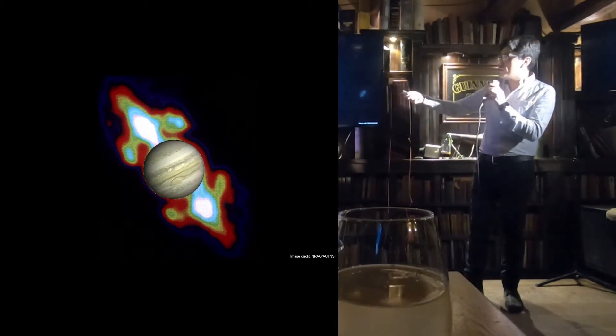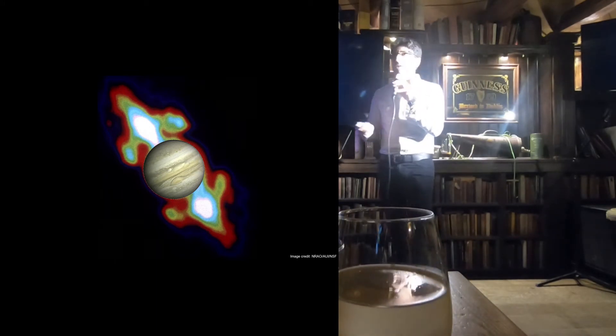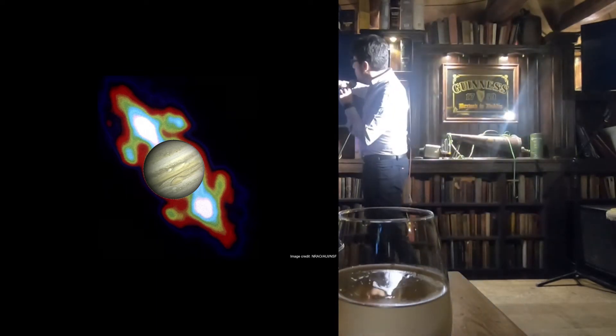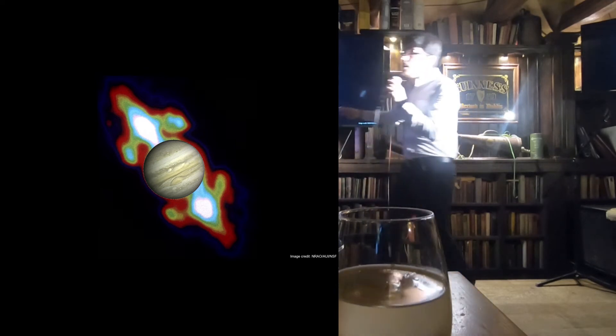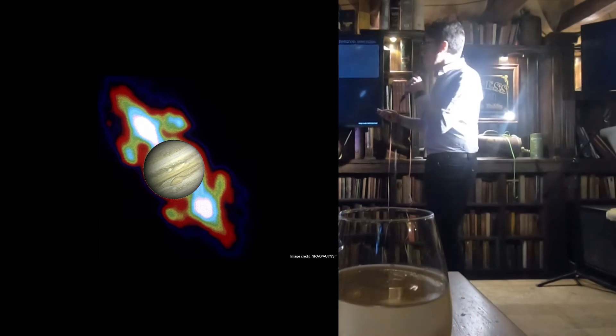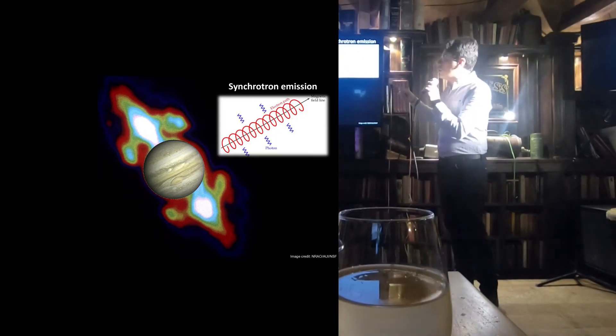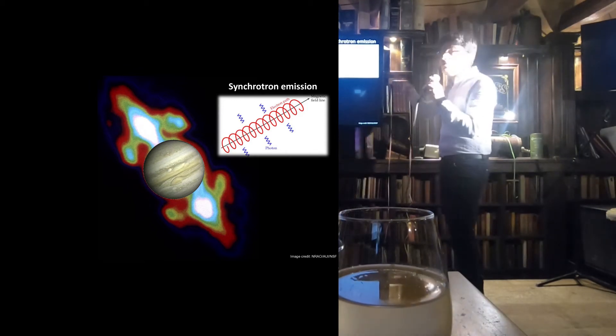Could you believe that this is totally different from what Jupiter looks like at optical frequencies? I mean, when we look at this image here, we really discover that around Jupiter, surrounding Jupiter, there is this strong magnetosphere that we cannot see in other wavelengths. And this is produced by a different mechanism here, which is called synchrotron emission, which is a kind of emission produced when a relativistic electron is accelerated along magnetic field lines.